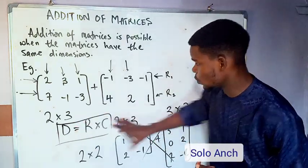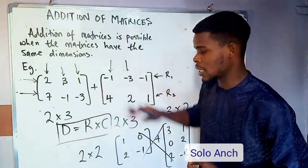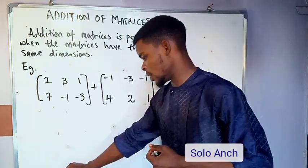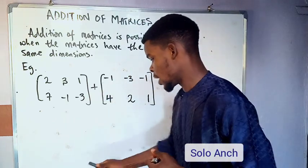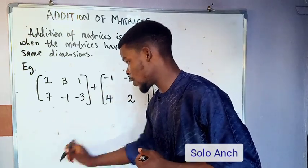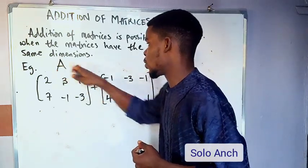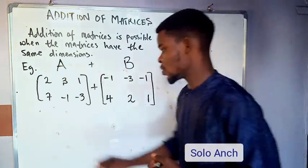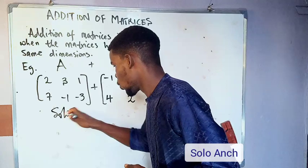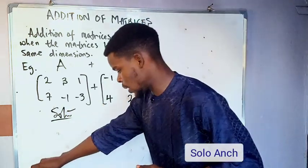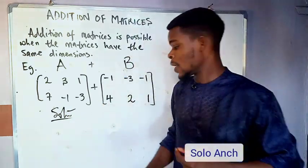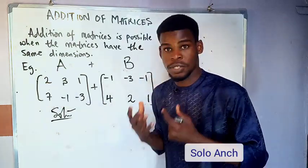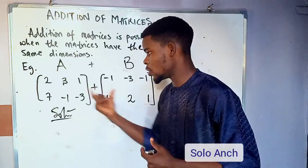I'm going to clean up this rough work and then we'll add the two matrices together. We have the first matrix and the second matrix — let's call them A and B. To add matrices together, you add the corresponding entries together.